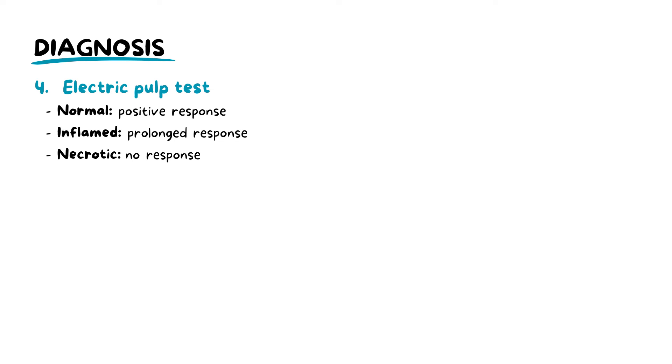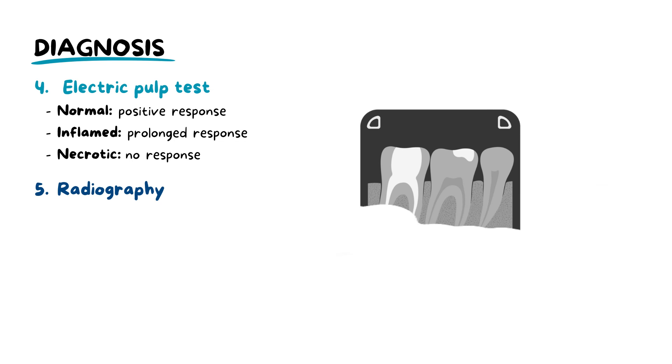Dental imaging, such as a periapical radiograph, is crucial for detecting apical radiolucencies, offering insights into the extent of tooth decay and inflammation.